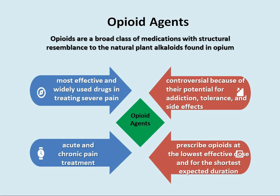Opioid agents are a broad class of medications with structural resemblance to natural plant alkaloids found in opium. They are controversial because of their potential for addiction, tolerance, and side effects. They should be used at the lowest effective dose and for the shortest expected duration. They are the most effective and widely used drugs for treating severe acute and chronic pain.